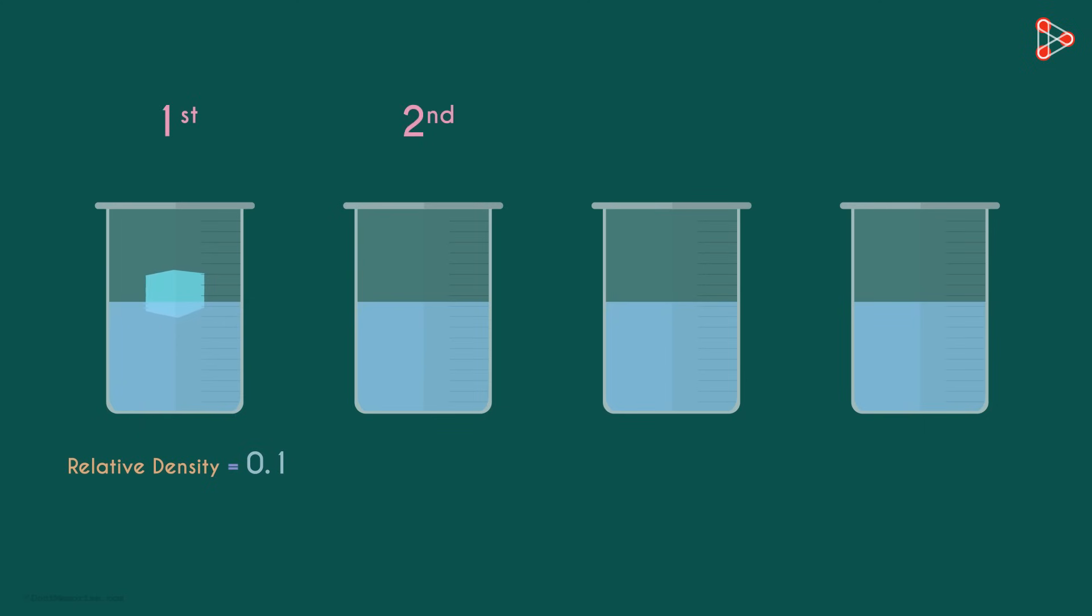In the second one, drop a substance with relative density of 0.4 and you'll see that it floats like this. More of it is inside the water. And if it's 0.9, even more of it will be inside the water. But it will still float. And if it's greater than 1, say 1.2 or 1.3, then it will sink.